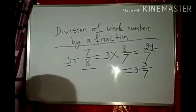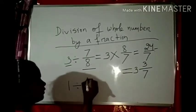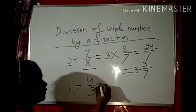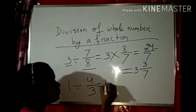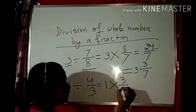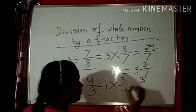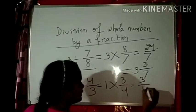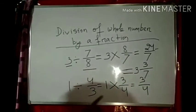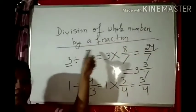Next, another example: 1 divided by 4 by 3. Multiply 1 into the reciprocal of 4 by 3, which is 3 by 4. So 1 into 3 equals 3, and 4 remains. The answer is 3 by 4. This is division of a whole number by a fraction.